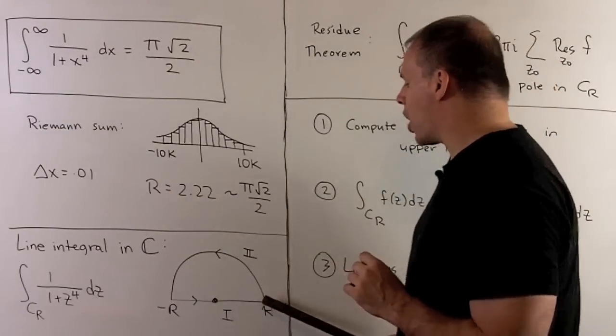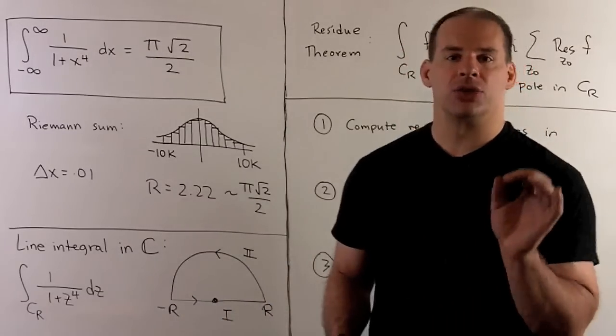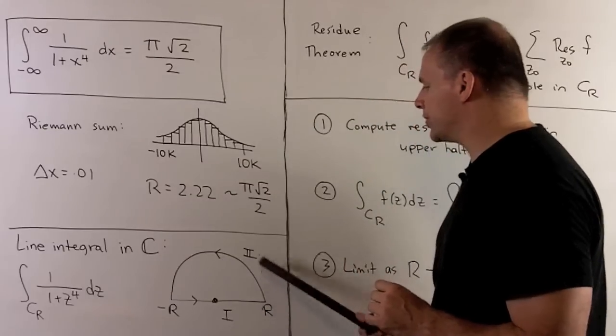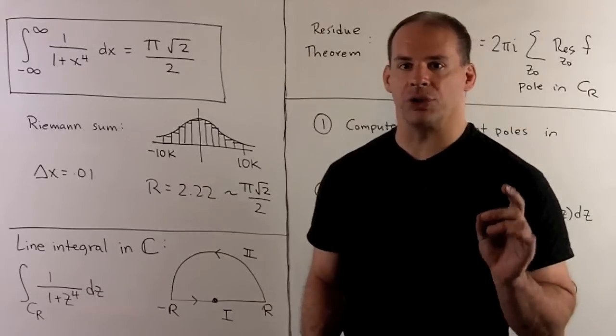We're going to go from minus R to R on the real axis. Then we're going to close it off by using a circle, centered at the origin of radius R, and we just use the top half. Then I orient everything in the counterclockwise direction.